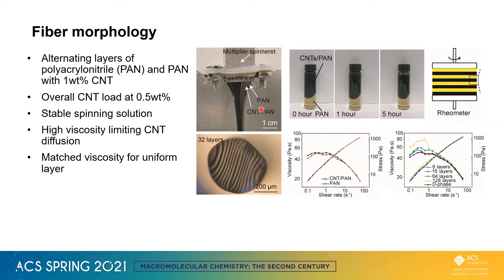Here's an example during the fabrication process. Here is the multiplier spinneret, and here's the spinning dope exiting the spinneret, where the transparent layer indicates the PAN spinning dope and the black one indicates CNT PAN. The spinning dope showed high stability across over five hours, and the high viscosity limited CNT diffusion. Also, we matched the viscosity between the CNT and PAN layer to obtain uniform layer thickness.